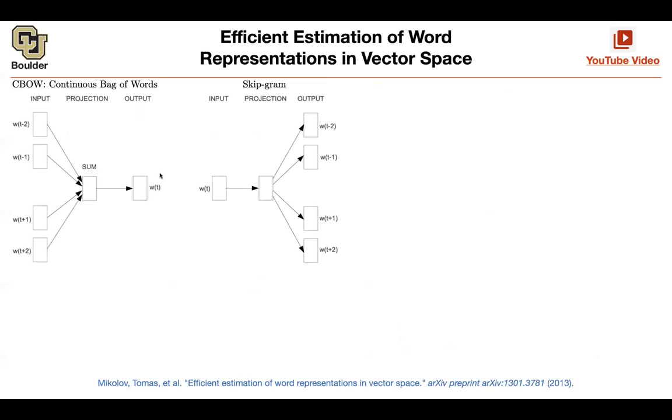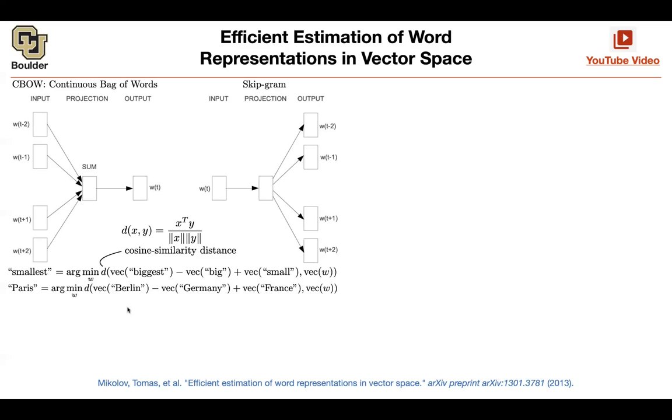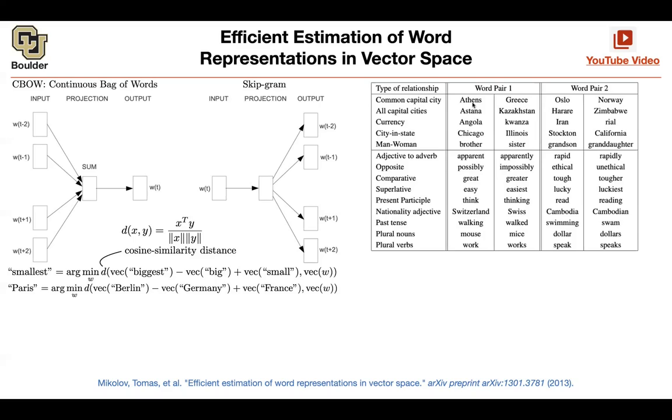Again, you're going to do semantic and syntactic analysis like biggest, big, small, smallest, Berlin, Germany, France, Paris. These are the typical datasets that I want you to explore. For instance, Athens, Greece, Oslo, Norway—Norway should be the answer.